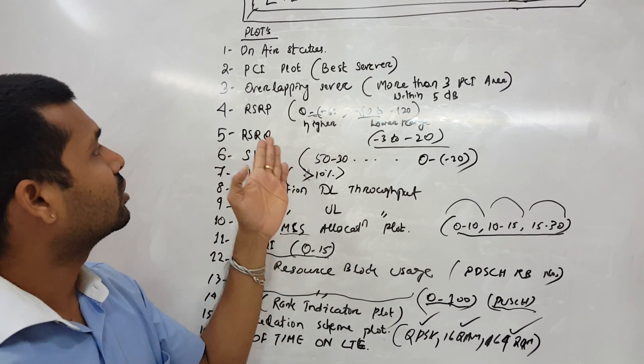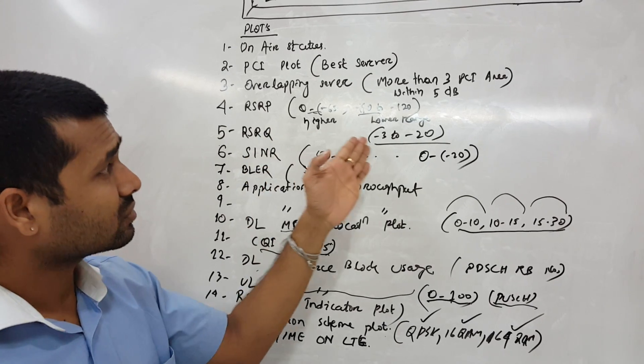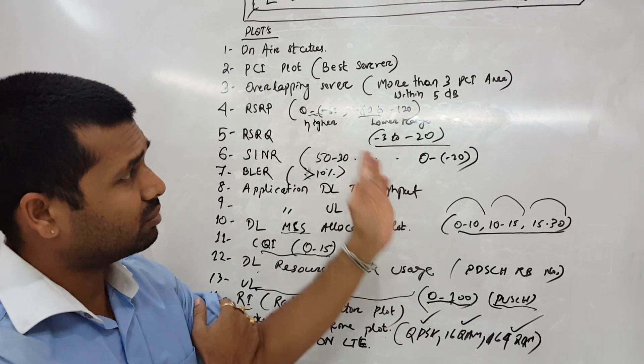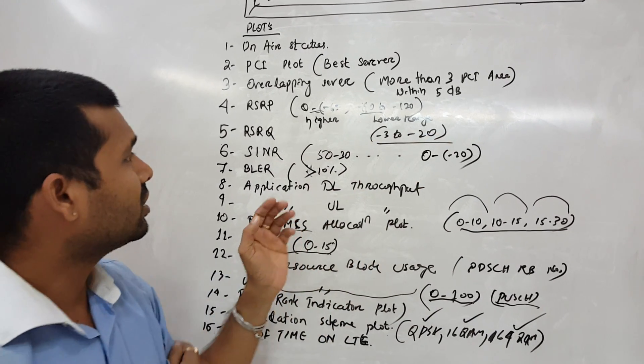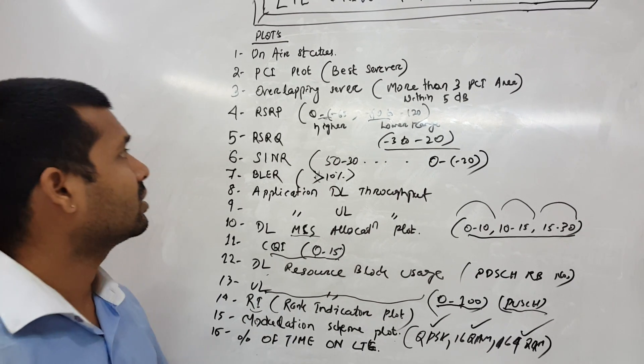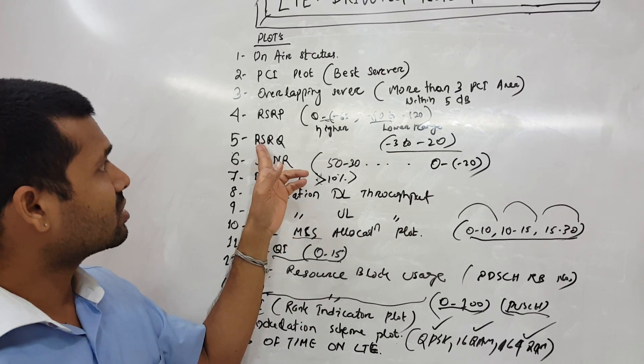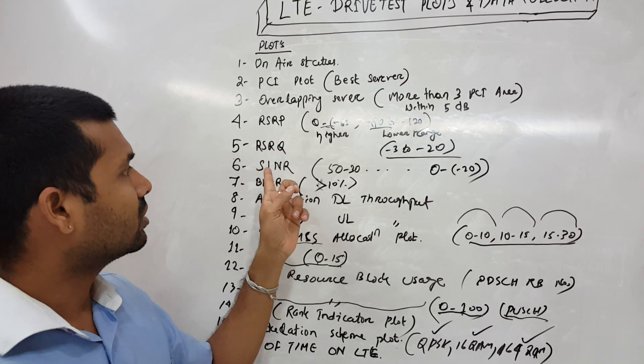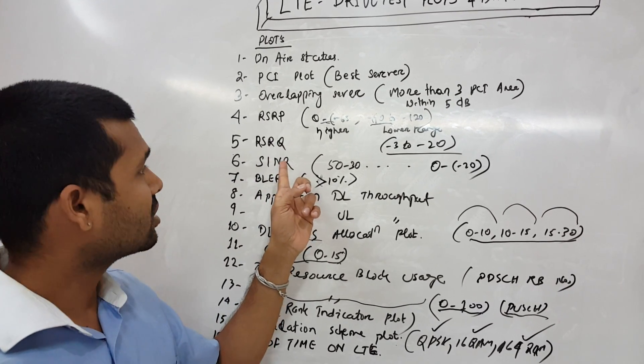Then RSRQ, it would be minus 3 being the best value and up to minus 20. SINR - signal to interference and noise ratio - this is the signal received quality. SINR would be up to 50 and in negation it would be till minus 20.